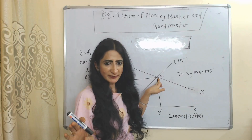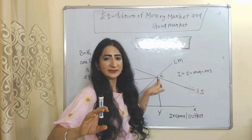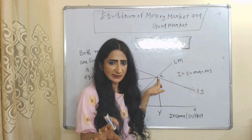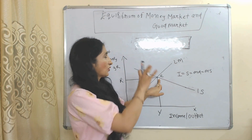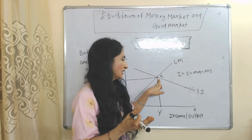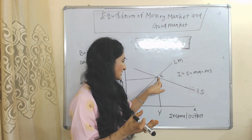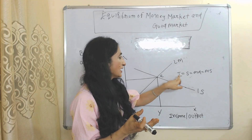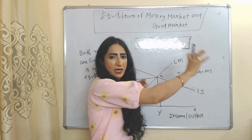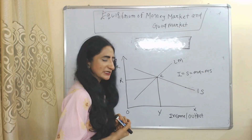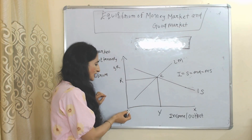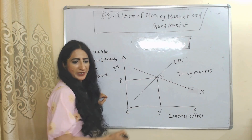Point E is called the equilibrium point where both markets are simultaneously in equilibrium. At this point, investment, saving, money demand, and money supply are all equal to each other. The equilibrium interest rate is OR and the equilibrium income is OY.